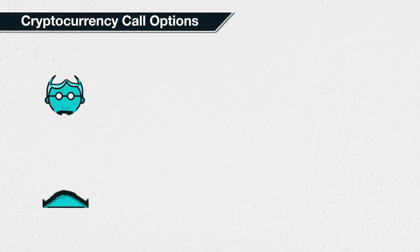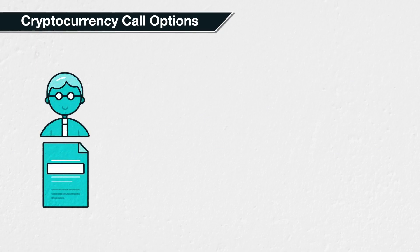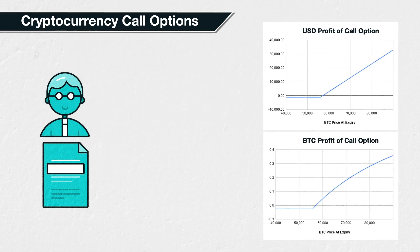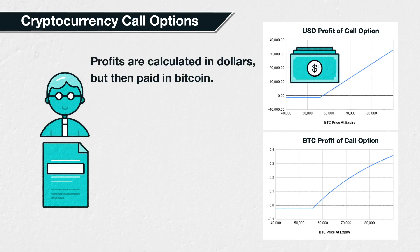A call option gives the holder the right to buy something, and the same is true for a cryptocurrency call option. When a call option expires, its value will be equal to any amount over the strike price that the underlying price is. This is true for cryptocurrency call options too. So why do we have a separate lecture for calculating the profit or loss of cryptocurrency call options? The reason is that while the profit or loss is still calculated in dollars, the cryptocurrency options on Deribit use the cryptocurrency itself as collateral.